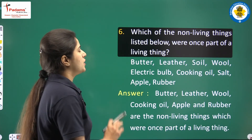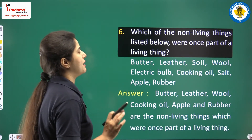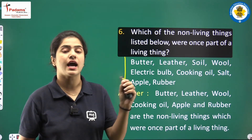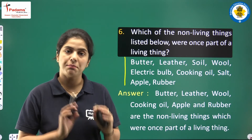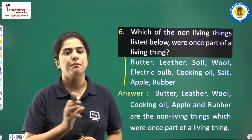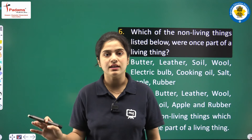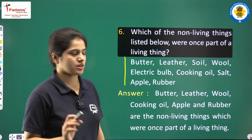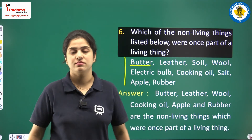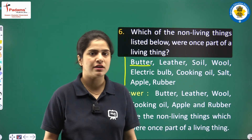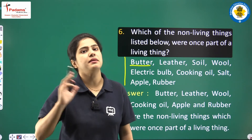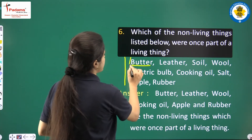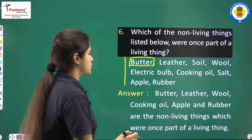The next question: which of the non-living things listed below were once part of a living thing? We need to identify materials that were once part of a living thing. For example, butter comes from milk, which comes from cows or buffaloes — living beings. So butter, though now a non-living thing, was once part of a living thing. Leather is made from animal skin, so it was once part of a living being as well.